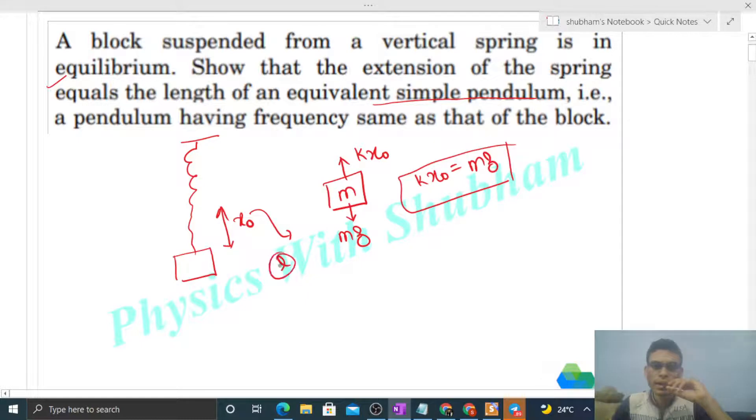So the length is l, right? So k into l, we replace x naught, so that is equal to mg. Now we have to show that frequency is the same for the pendulum and the spring block system.